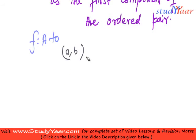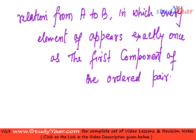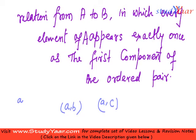Our definition says: for all ordered pairs, an element of A — let us suppose my element of A is small a — appears exactly once as the first component. So I should only have (a, b); I should not have (a, c) in my relation as well. If I have (a, c) in my relation then I cannot call this relation a function.